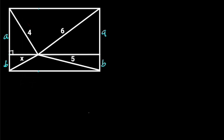Next, let's draw another perpendicular line that also passes through the point where the lines in the given rectangle intersect. Let this side be C and this side D. Since the opposite sides of rectangles are equal, this side will also be C and this side D.